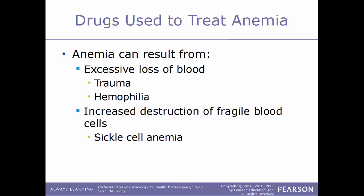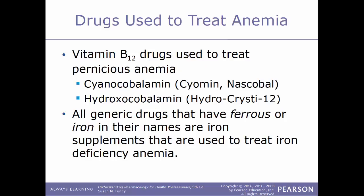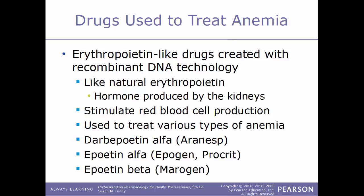Our first kind of drug to treat anemia are vitamin B12 drugs, which help treat pernicious anemia. Examples include cyanocobalamin, sold under the trade names Nascobal and Simron; and hydroxocobalamin, also known as Hydro Crysti-12. All generic drugs that have the term 'ferrous' or 'iron' in their names are iron supplements, used to treat iron deficiency anemia. Another type of drug used to treat anemia are erythropoietin-like drugs created with recombinant DNA technology.